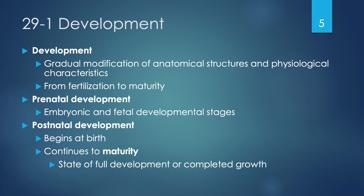The embryonic period is when we're forming all of our organs and becoming a humanoid structure. By the time we're fetal, all of those organs are developed but not yet fully mature — it's during the fetal period that organs become much more mature. Postnatal development is expected at around 40 weeks, at which point you have a healthy infant who will continue developing until the point of complete maturity.